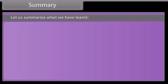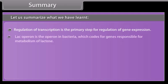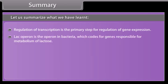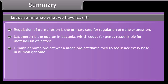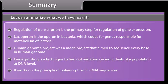Summary. Regulation of transcription is the primary step for regulation of gene expression. Lac operon is the operon in bacteria which codes for genes responsible for metabolism of lactose. The Human Genome Project was a mega project that aimed to sequence every base in the human genome. DNA fingerprinting is a technique to find out variations in individuals of a population at the DNA level, and it works on the principle of polymorphism in DNA sequences.